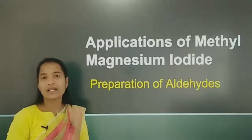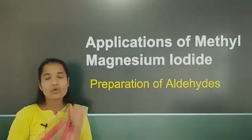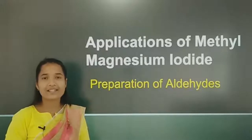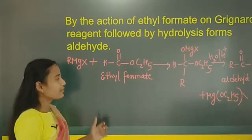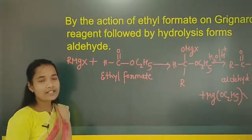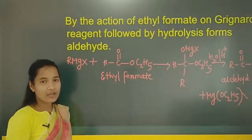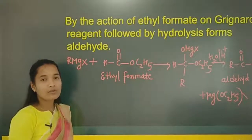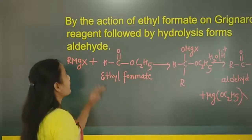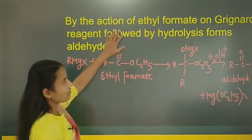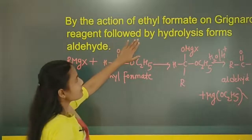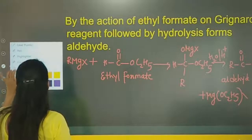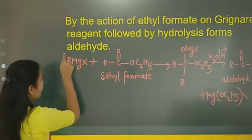Now let's come to today's concept — the preparation of aldehydes. The functional group of aldehydes is CHO. Let me discuss the preparation of aldehydes using methyl magnesium iodide. First, we can take the general reaction using Grignard reagent. By the action of ethyl formate on the Grignard reagent, followed by hydrolysis, it forms an aldehyde.